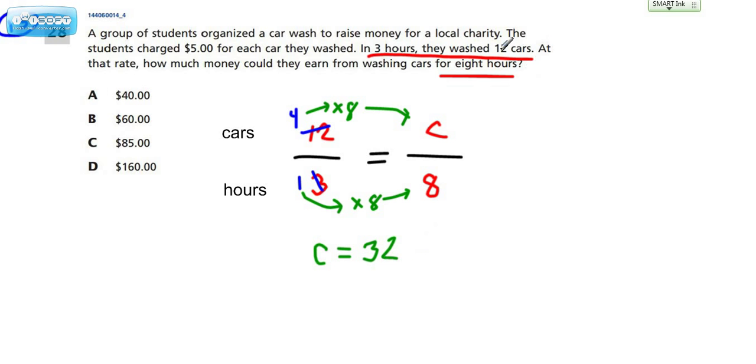Now that's not the answer because they're interested in how much money and they're charging five dollars for each car. So if they're washing 32 cars, we still have to multiply that number by five dollars to get the answer, which will be, of course, in dollars.